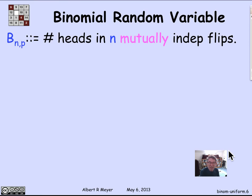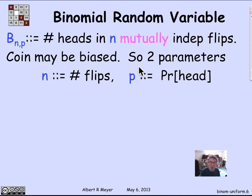Let's turn from uniform random variables to binomial random variables — probably the most important single example that comes up all the time. The simplest definition is the one you get by flipping N mutually independent coins. The coins have an order so you can tell them apart, or equivalently, you flip one coin N times with each flip independent of all others. There are two parameters, N and p: N is how many flips there are, and p is the probability of a head, which might be biased. The fair case is when p equals one-half.